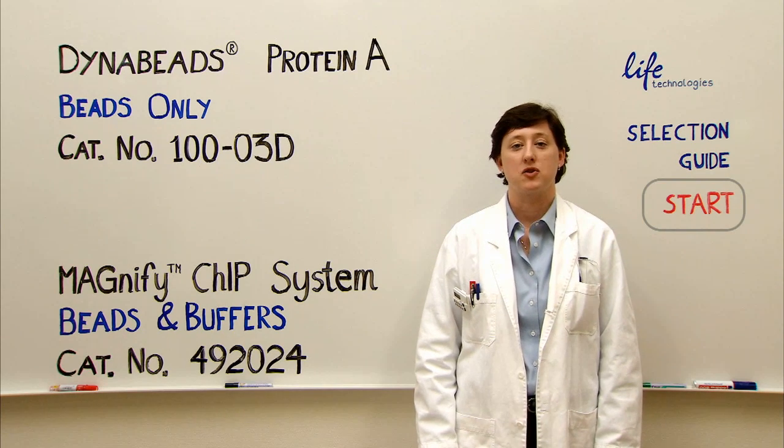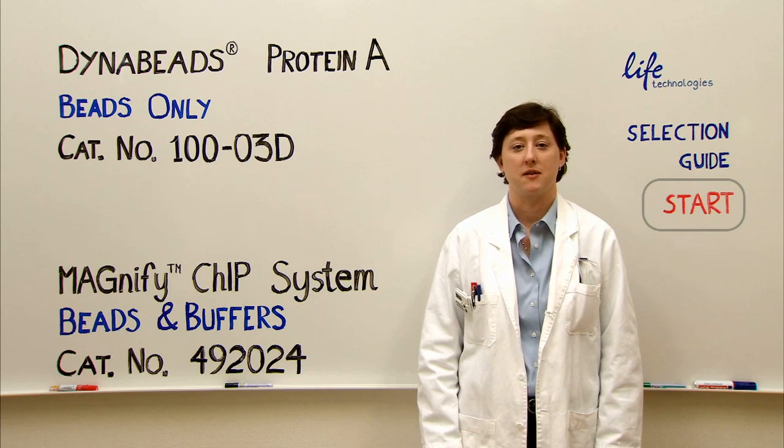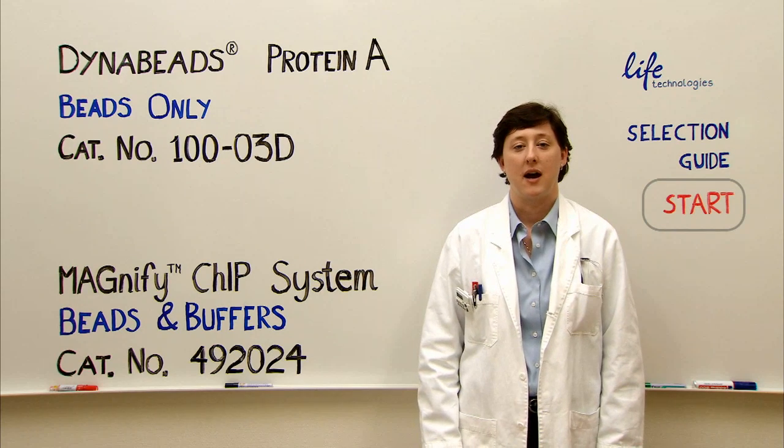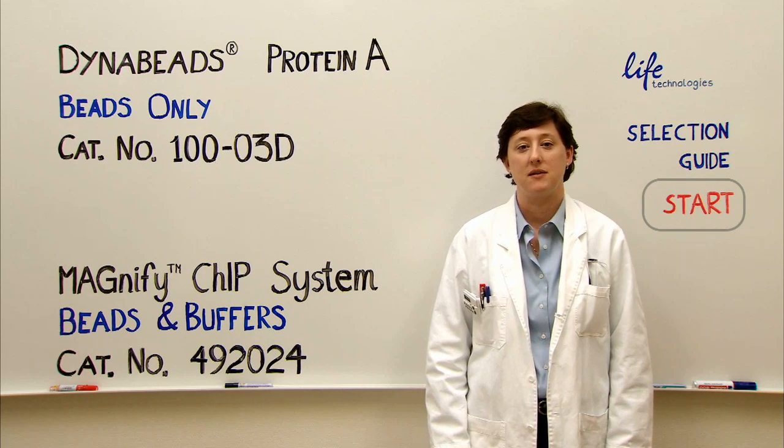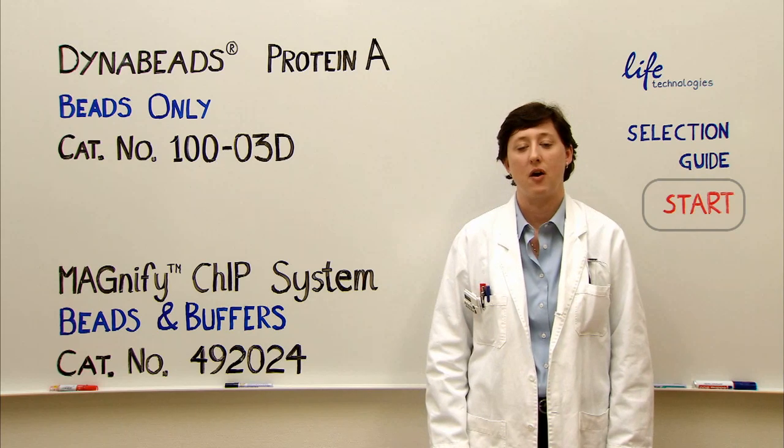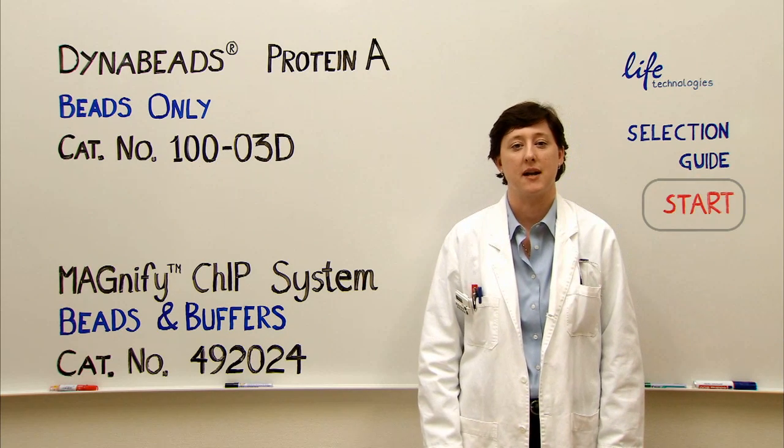DynaBeads Protein A is an excellent choice for chromatin immunoprecipitation. For maximum flexibility, I recommend that you use the Protein A beads along with your own buffers if they've already been optimized for your experimental setup.